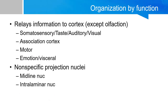There are many ways to organize the thalamus and one of these ways is by its function. We all know that the thalamus is a major relay station for the brain and for the cortex. For the most part, it relays all the primary sensory information such as somatosensory, taste, auditory, and visual information to the cortex — all except for olfactory information.